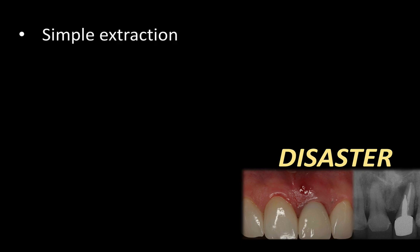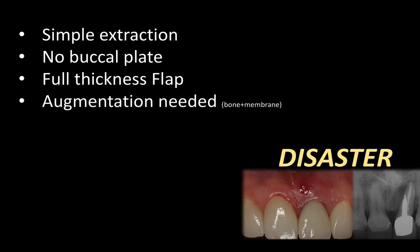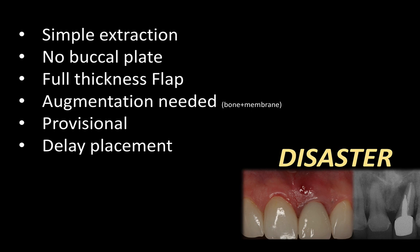I know the extraction is going to be relatively simple and not too challenging. I know the buccal plate is compromised, and therefore I'll have to reflect a full-thickness flap, augment the area with bone and a membrane, and deliver some sort of provisional. I also know that very likely I'll have to delay implant placement. With a significant infection in the site and missing buccal plate, many times it's safer, more conservative, and has fewer problems to delay the placement.